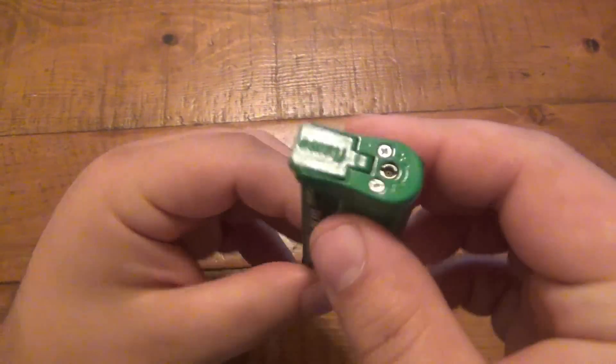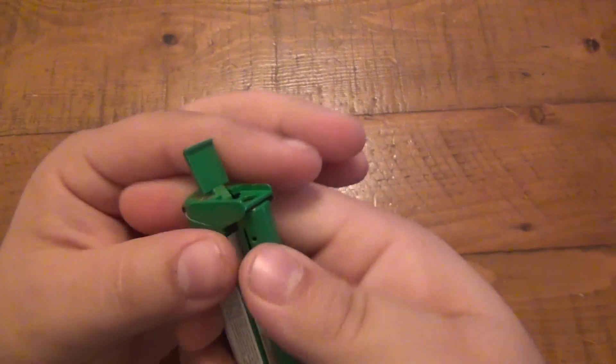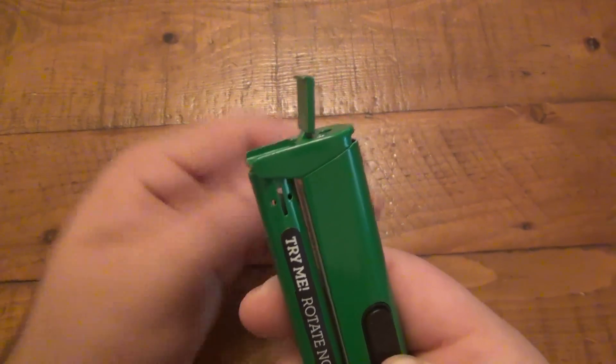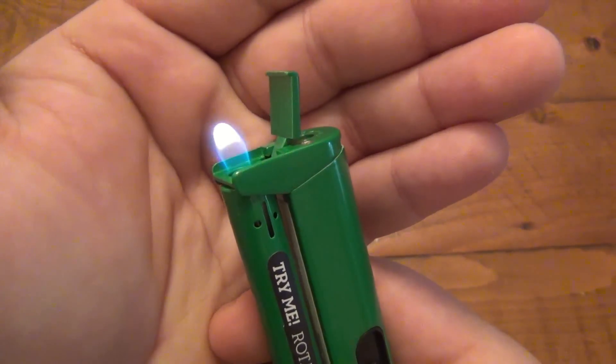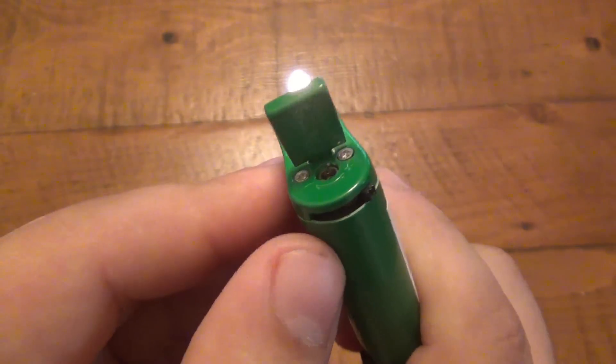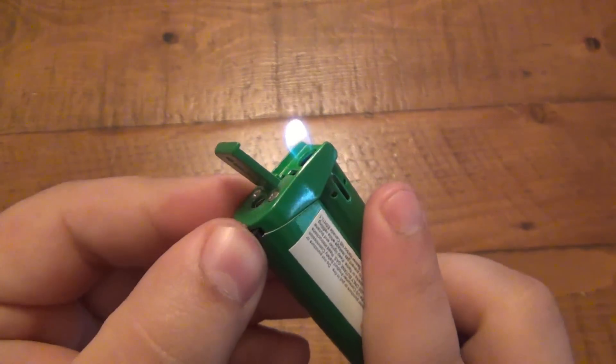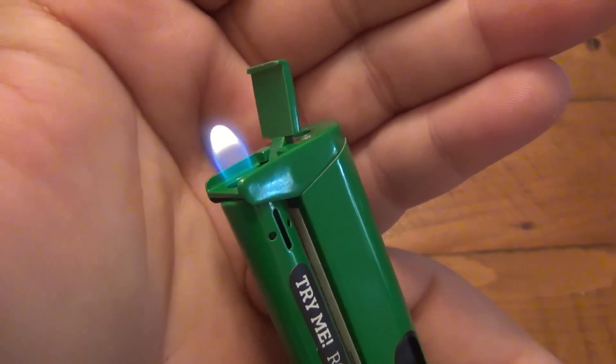So the whole concept here is that we have a pocket lighter. You flick this little door up, there's a switch on the side you pull down, and there's your flame. Now it is adjustable, however this is the highest it goes, that's the lowest it goes which is like nothing.